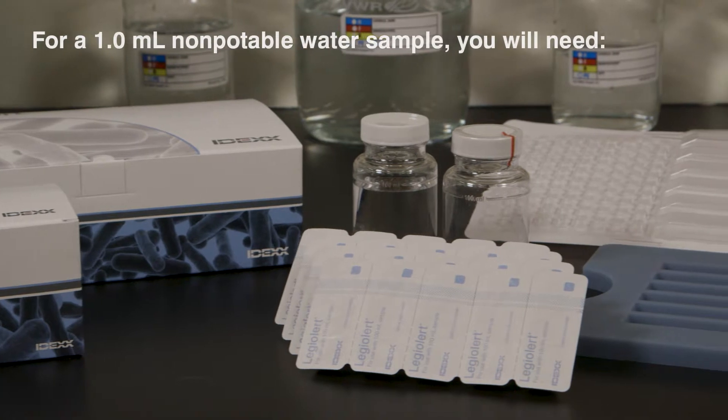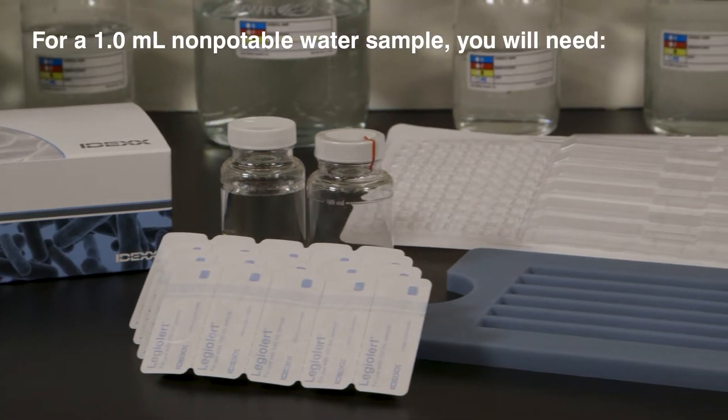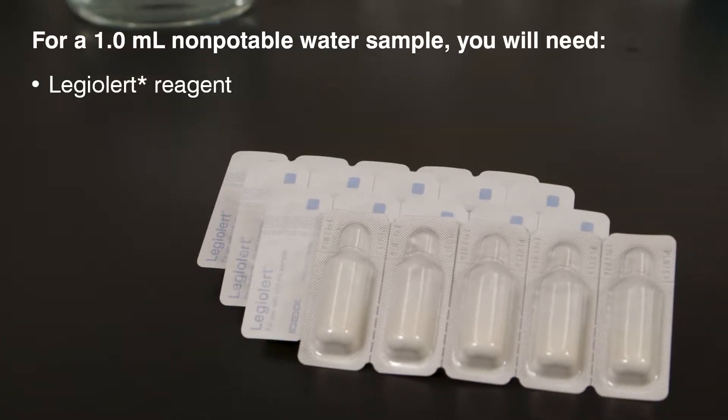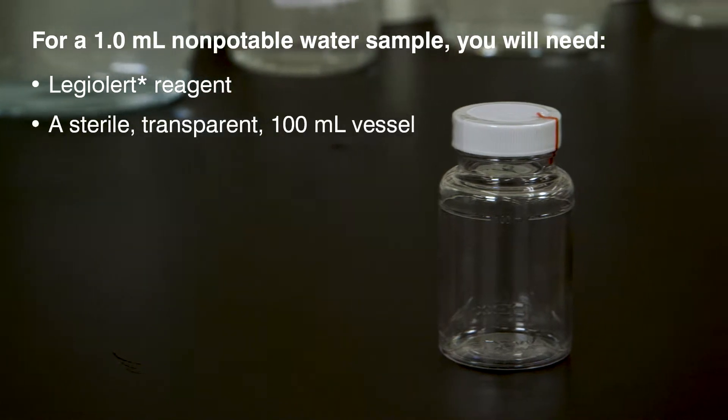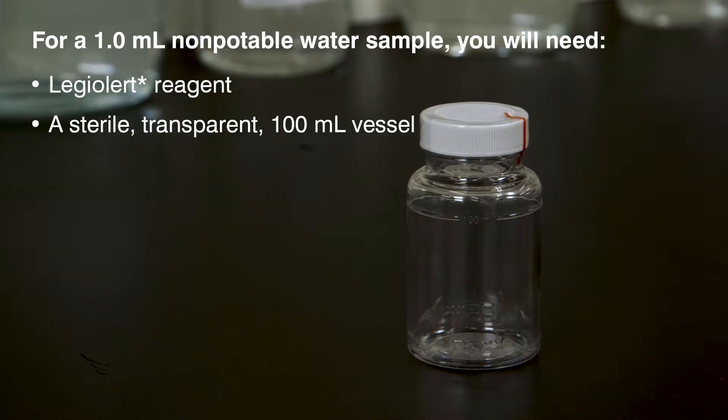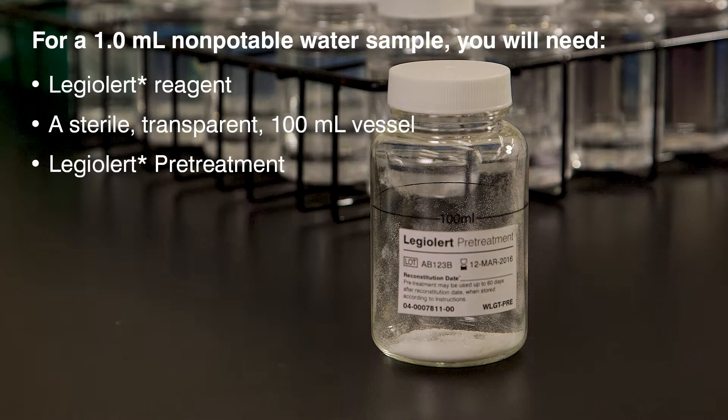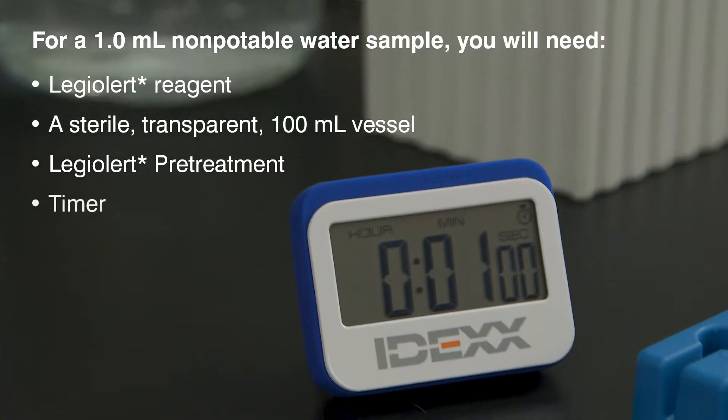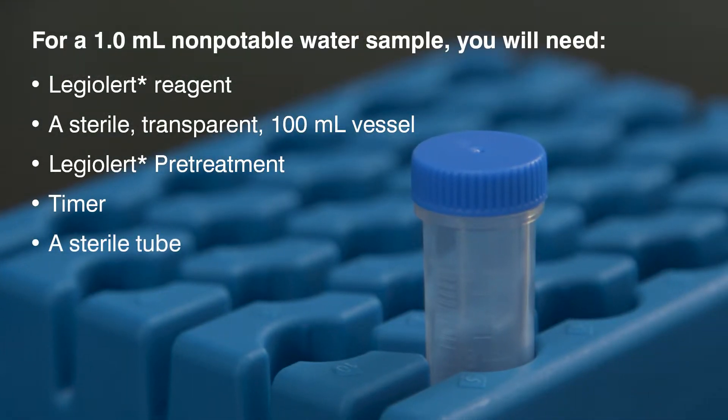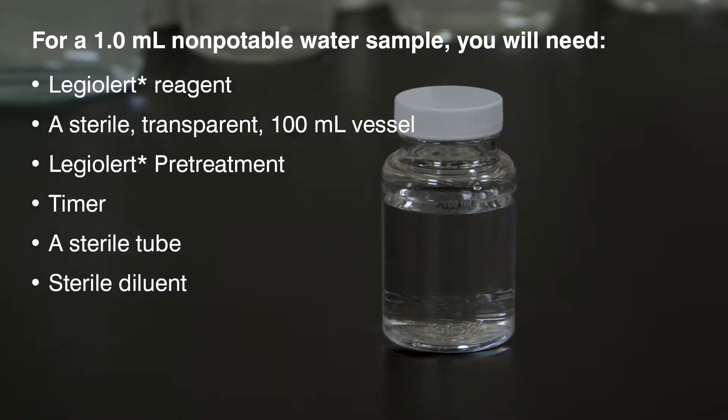To prepare a 1 mL non-potable water sample, you will need the LEGALERT reagent, a sterile transparent 100 mL vessel, the LEGALERT pretreatment kit, a 1-minute timer, a sterile tube, and sterile diluent.